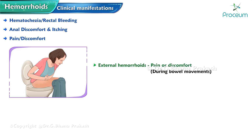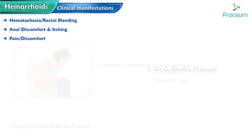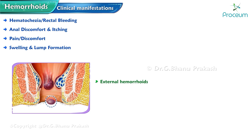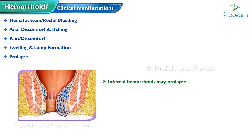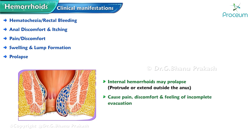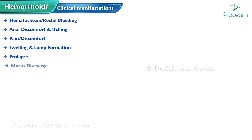External hemorrhoids can cause pain or discomfort, especially during bowel movements, and may be tender to the touch. They can be felt as small painful lumps around the anus and may appear as swelling or protrusions. In some cases, internal hemorrhoids may prolapse, meaning they protrude or extend outside the anus, causing pain, discomfort, and a feeling of incomplete evacuation.